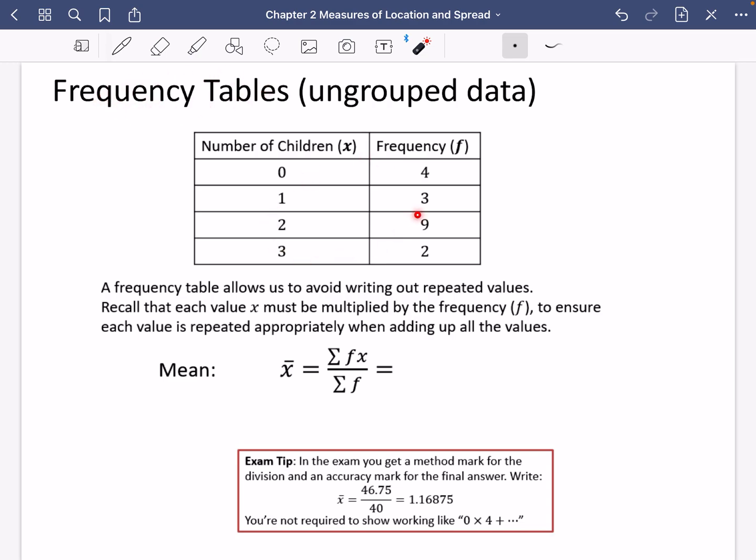So they're not in a list, they're actually in a table here, and this one is talking about the number of children in a family and the frequency.